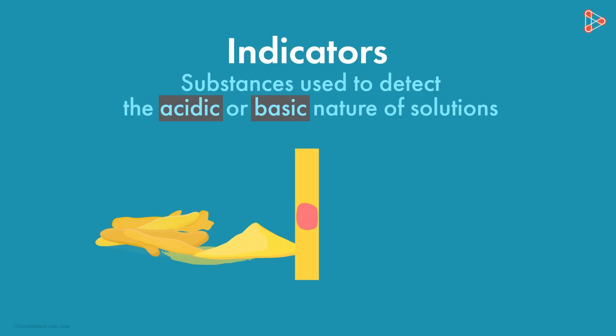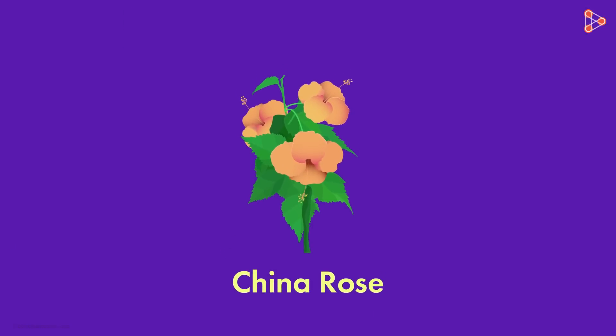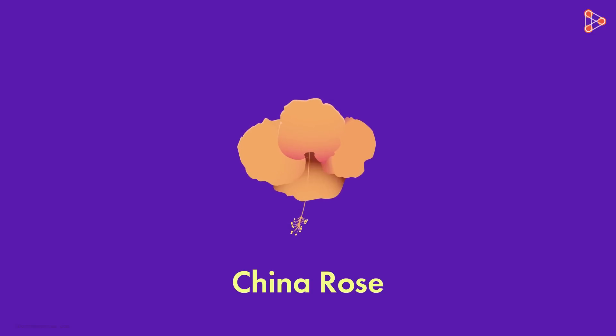Now let's talk about another natural indicator, and that is China Rose. China Rose is a plant. So how can that be used as an indicator? The fact is, the flowers of China Rose possess a good ability of detecting acids and bases. So how do we use China Rose flower as an indicator? It's very simple.